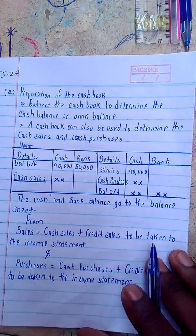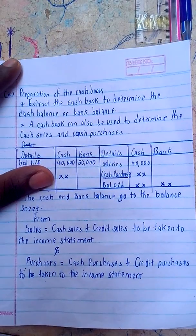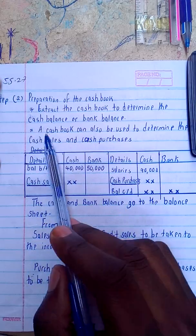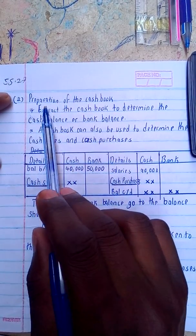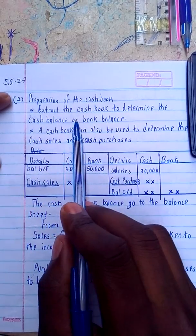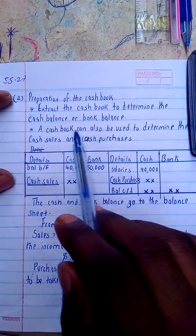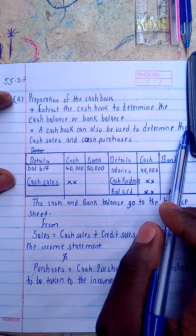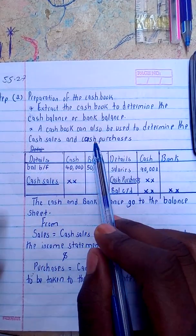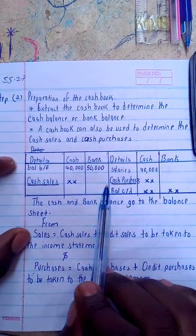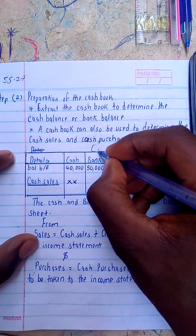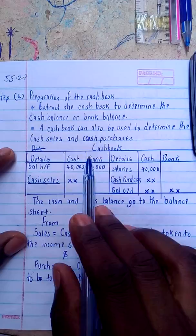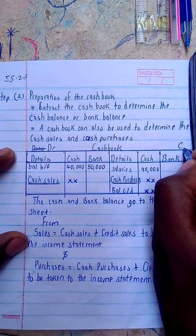For the next step, it's going to be preparation of the cash book. With the preparation of the cash book, I'm going to extract the cash book to determine the cash balance or bank balance. After that, I can also extract this cash book to determine the cash sales or cash purchases. An illustration is as below — with a heading, my cash book, then I set details, cash, bank. This is the debit side and this will be my credit side.